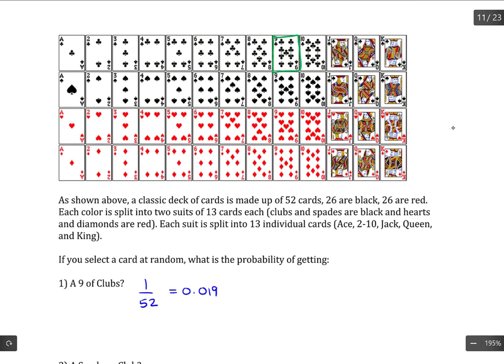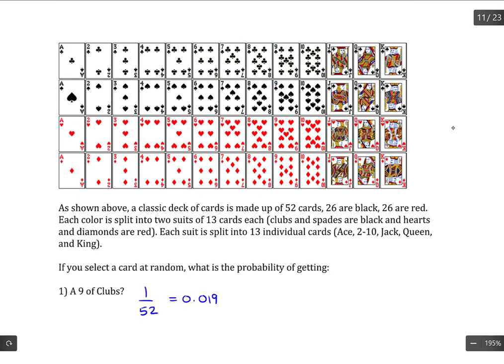Now, a spade or a club. The spades is a suit and it comprises all of these cards, and the clubs is another suit which comprises all of these cards.